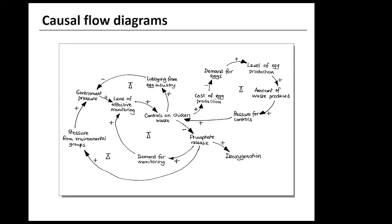Finally, thinking about the economics of egg production, increasing controls on chicken waste will lead to higher costs, so the demand for eggs will decrease. The number of eggs produced will also decrease, leading to a decrease in the amount of waste and a consequent reduction of pressure for controls on chicken waste. That could then lead to fewer controls, and so phosphate released would start to increase again, and again we have a balancing loop.